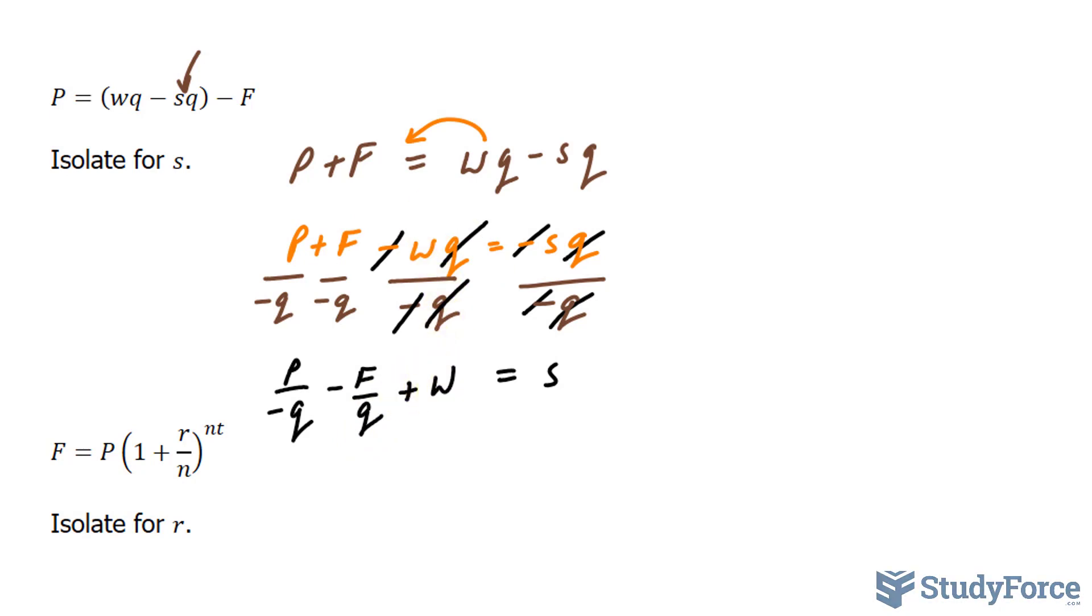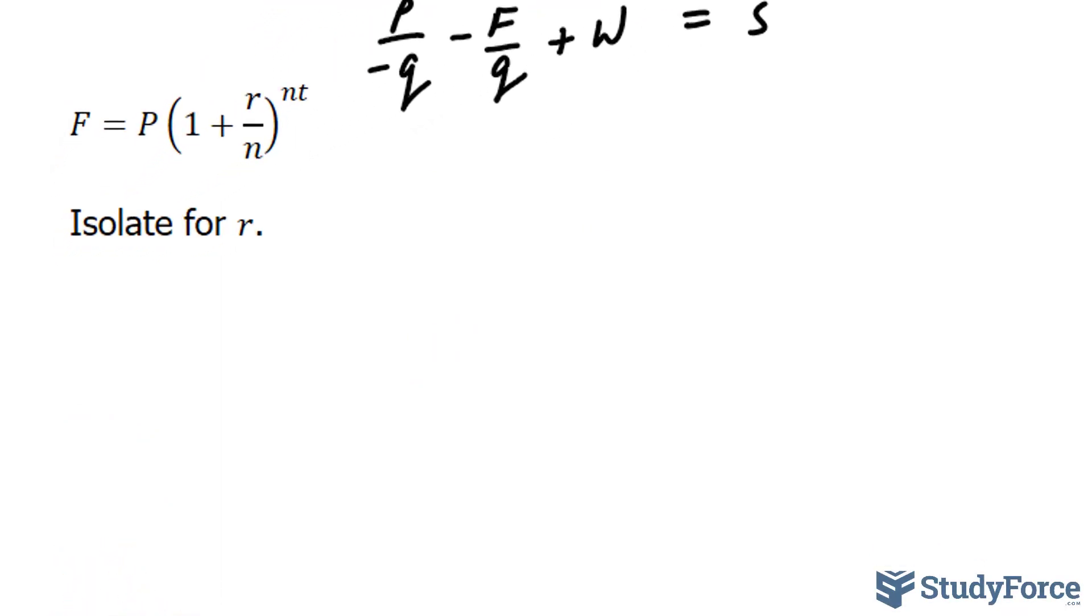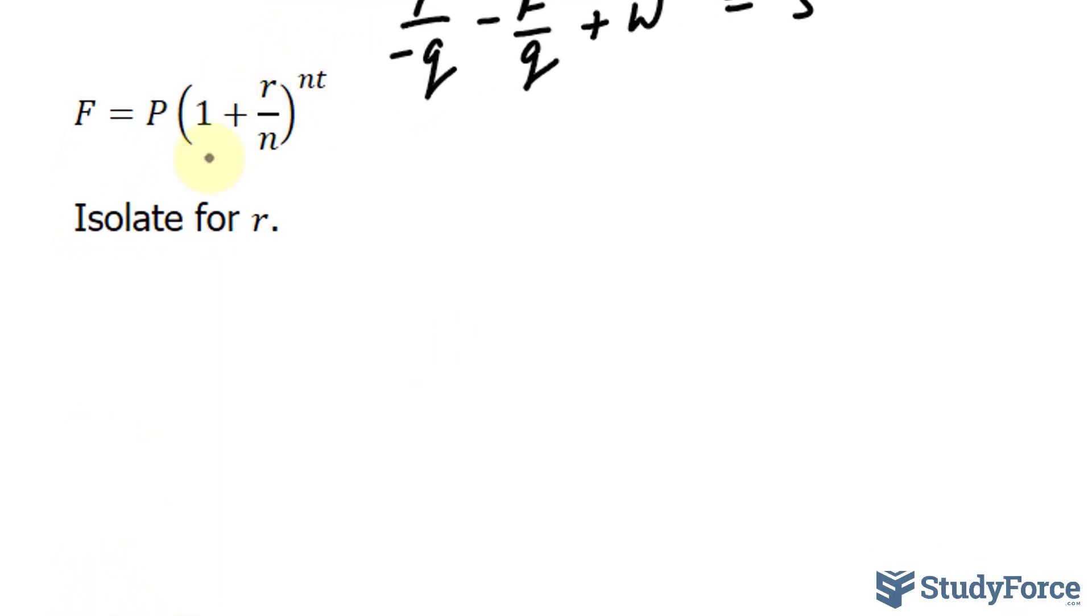Now let's move on to the next example. They want us to isolate for R. This is the compound interest formula, in case you're curious, and we want R, so R is found within parenthesis, and there's also a power nt. Let's start by getting rid of this factor P. I can do that by dividing both sides by P, giving us F over P is equal to 1 plus R over n bracket nt.